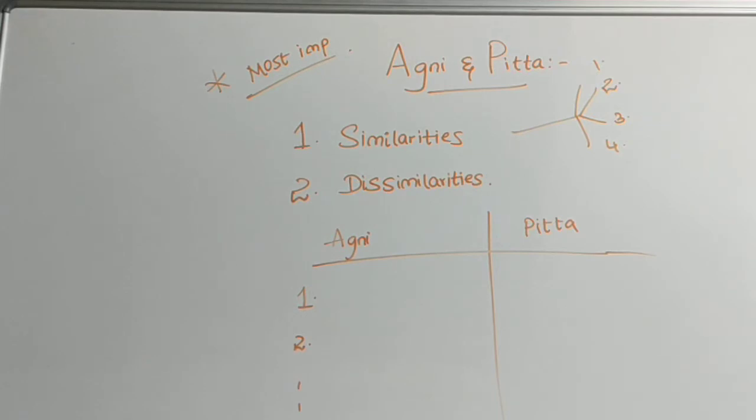And gritta is agni deepaka. Gritta is pitta shamaka. In the Charaka Samhita Sutra Sthana, you will find a quotation, grittam pitta nila haram. Here, you can find that gritta will cause reduction in the pitta dosha. But, you will see in yagnas and yagas, gritta will be poured in the agni. Because, gritta will increase the agni. Agni deepaka is gritta. Pitta shamaka is gritta. Agni deepaka is the second difference.